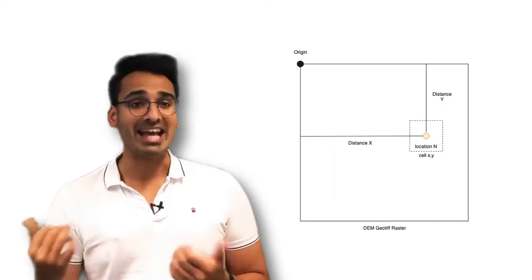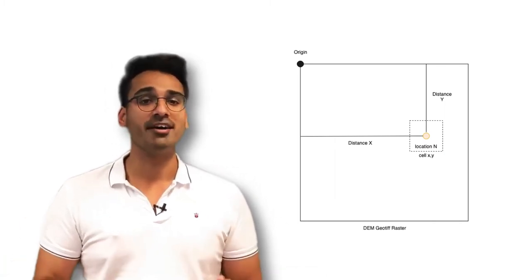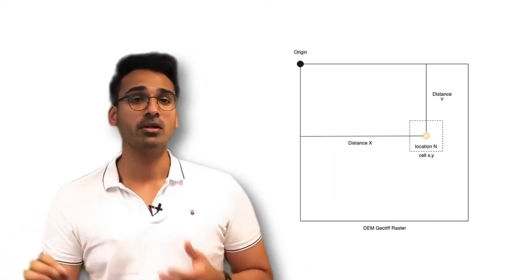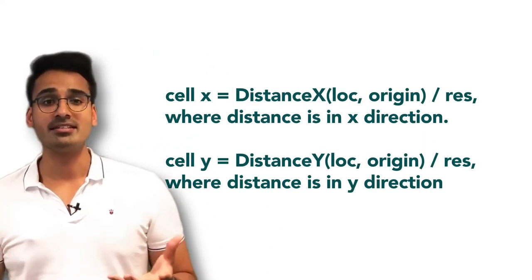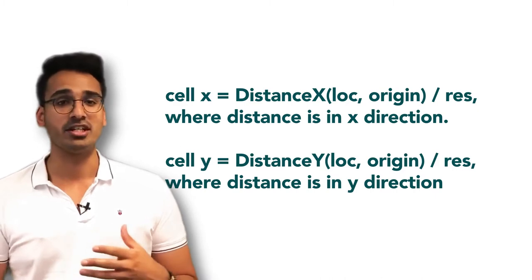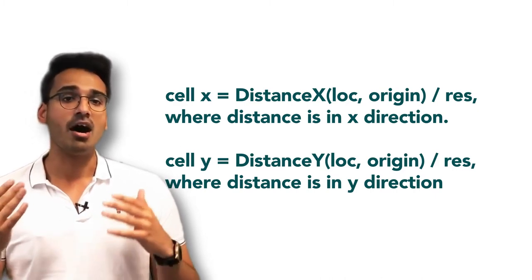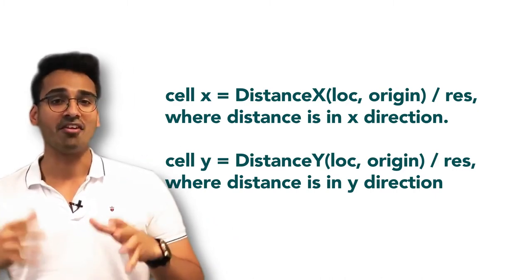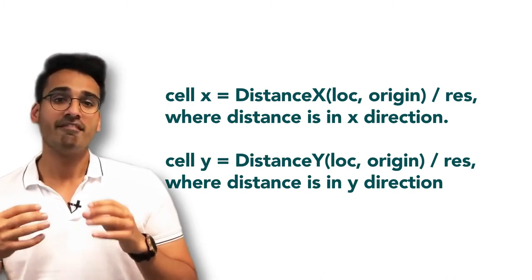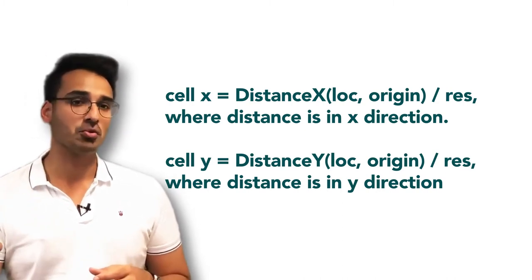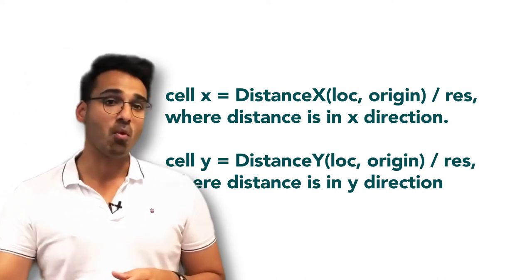Now for every waypoint at location n, the drone software would essentially find a relevant cell in the DEM file using the formula shown in the screen above. So in these formulas, the distances essentially, the y direction and the x direction and essentially the required cell has been found so that the software can read the right elevation module for the cell at x and y.